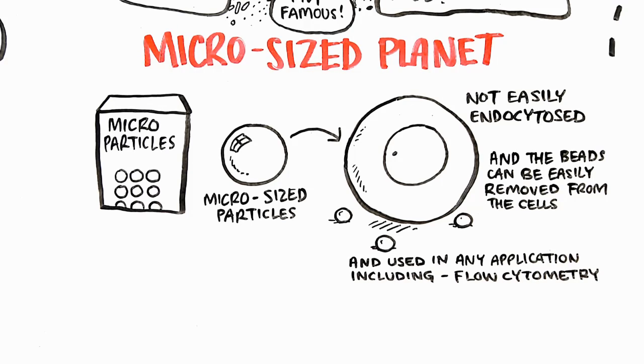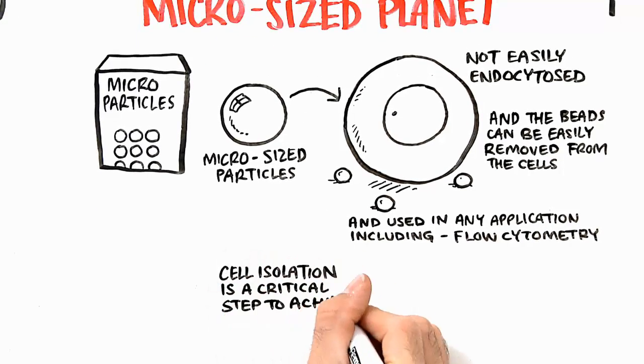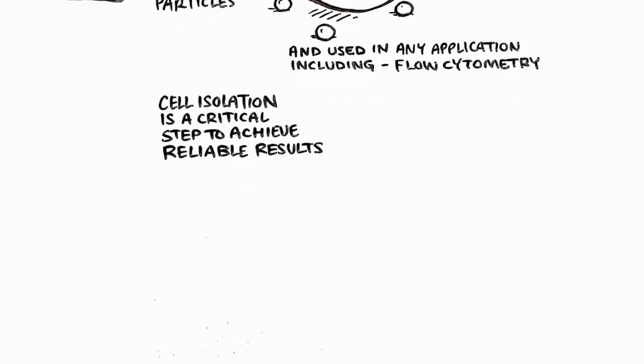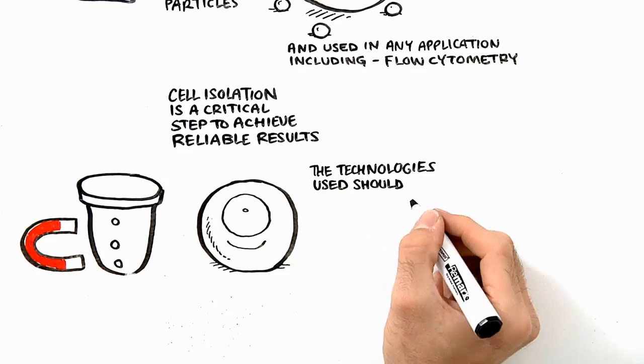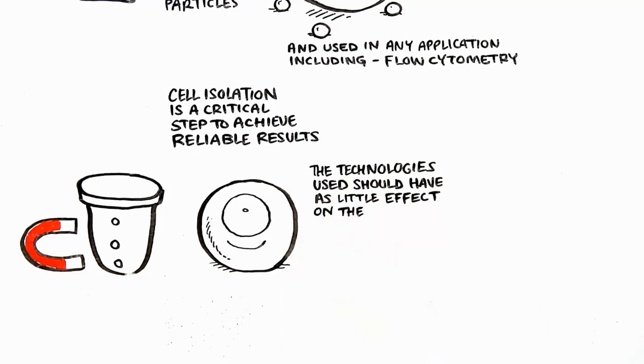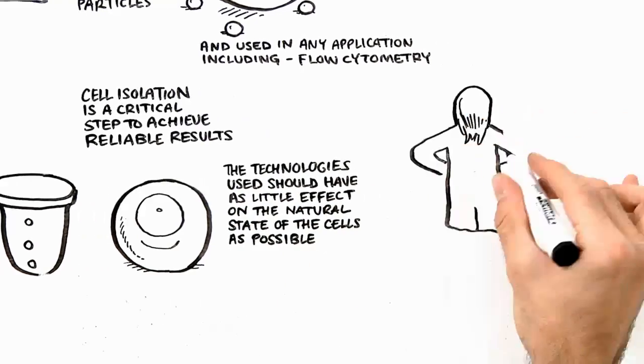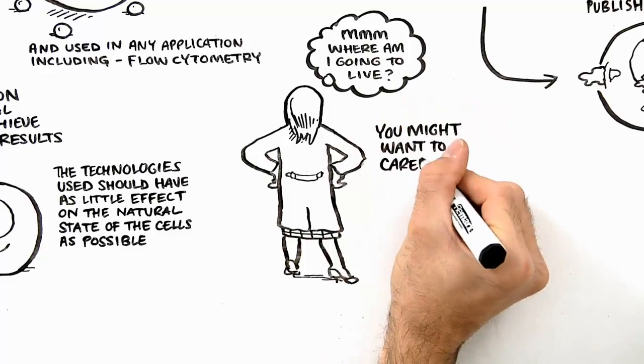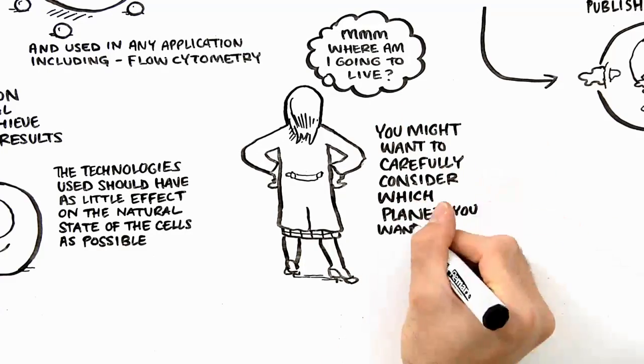Immunologists have recognized that cell isolation is a critical step to achieve reliable results. The technology used should have as little effect on the natural physiological state of the cells as possible. Knowing this, you might want to carefully consider which planet you want to live on.